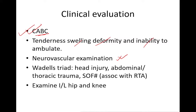Vital associated injuries include head injury, abdominal or thoracic trauma; shaft of femur fractures are very commonly associated with road traffic accidents. We should also examine the ipsilateral hip and knee.